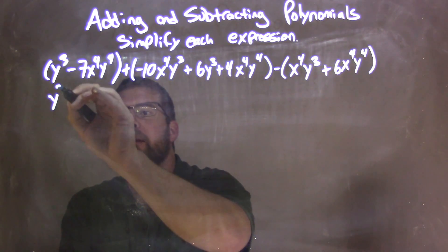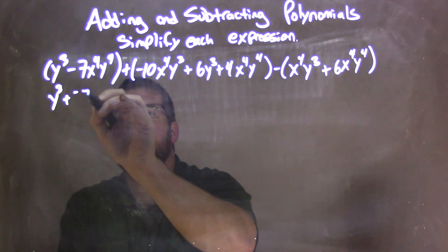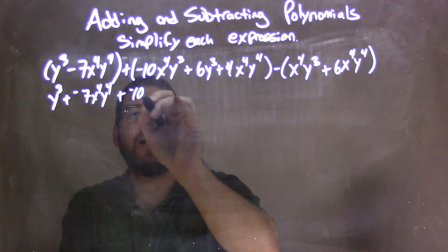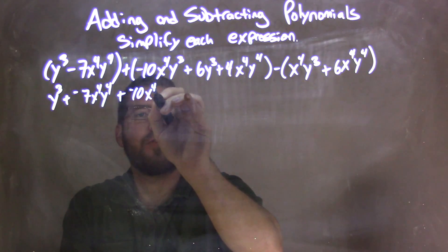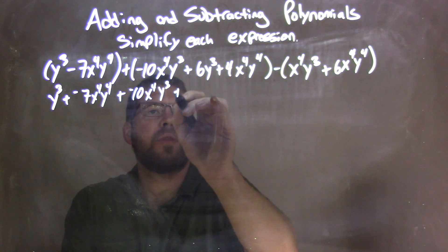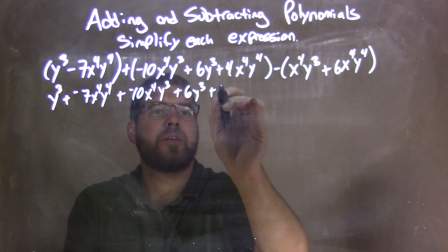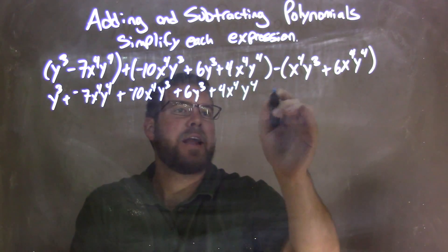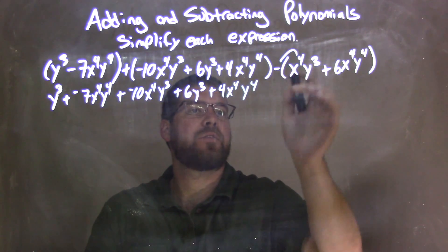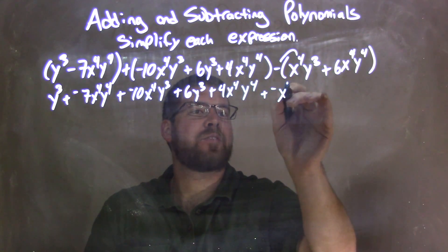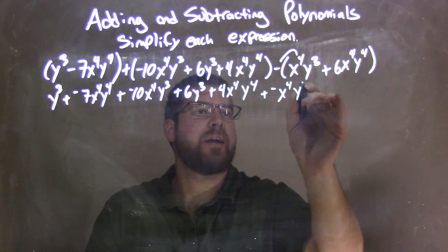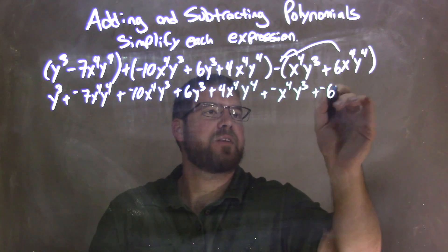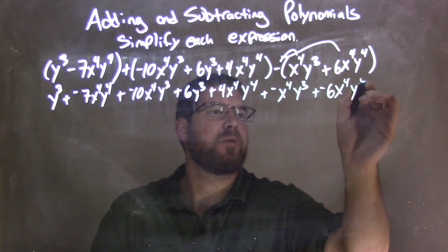So: y to the third, plus a negative 7x to the fourth y to the fourth, plus a negative 10x to the fourth y to the third, plus 6y to the third, plus 4x to the fourth y to the fourth. Now let's distribute this subtraction sign across: plus a negative x to the fourth y to the third, then plus a negative 6x to the fourth y to the fourth.